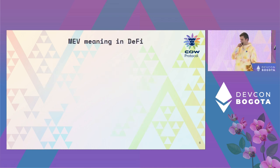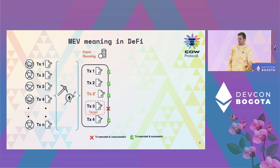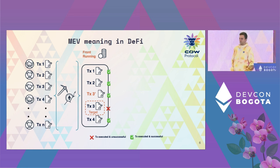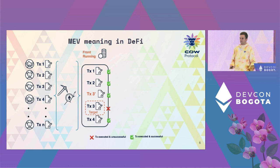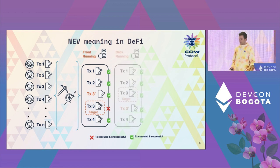Now, knowing where MEV comes from, let's see what can be done with the power of inserting transactions at your own will. There are three main forms of MEV attack. The first is front-running: any transaction with value, such as a liquidation or arbitrage, gets taken by the block producer. They replicate my transaction, put their transaction in front of mine, and ironically my transaction is also included after so they earn the gas fees I paid - and in the end, my transaction gets reverted.